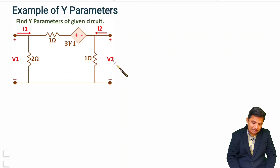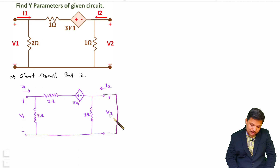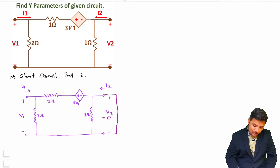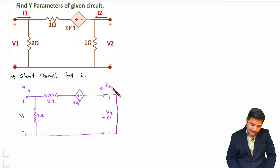I'll show you how to calculate that step by step. Let me redraw the circuit with port 2 short-circuited. By providing a short circuit at port 2, v2 becomes 0. This short circuit also shorts the 1-ohm resistor, so I don't need to include it. Our agenda is now to identify the ratio i1/v1 (which is y11) and i2/v1 (which is y21).